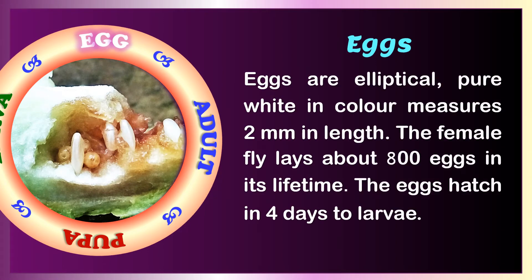Eggs are elliptical, pure white in color, and measure 2 mm in length. The female fly lays about 800 eggs in its lifetime. The eggs hatch in 4 days to larvae.